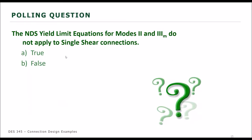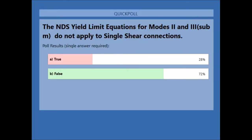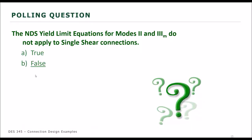Now we're going to jump into a poll. The NDS yield limit equations for Modes 2 and 3M do not apply to single shear connections — is that true or false? The results are in: 72% say false and 28% say true. The correct answer is false — the majority is correct. Double shear connections are where we can neglect Modes 2 and 3M, not single shear. So we got a bit tricky on that question.